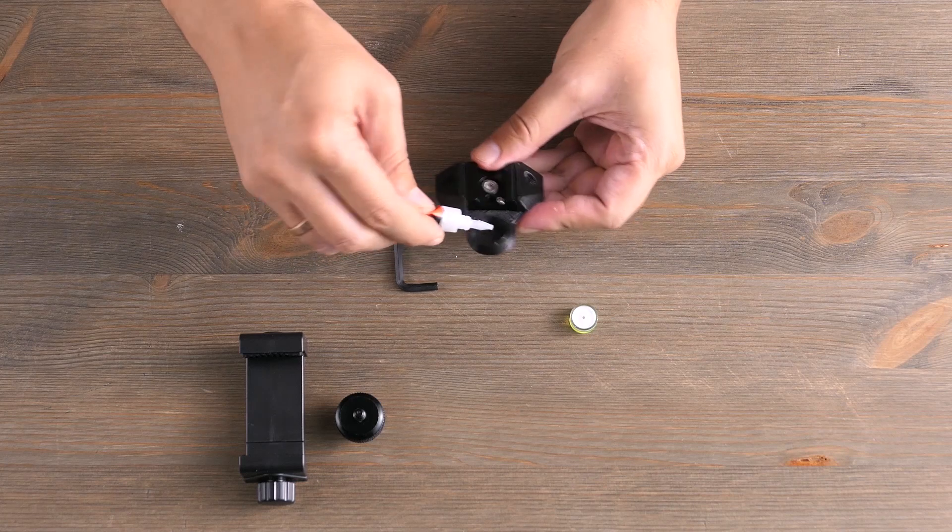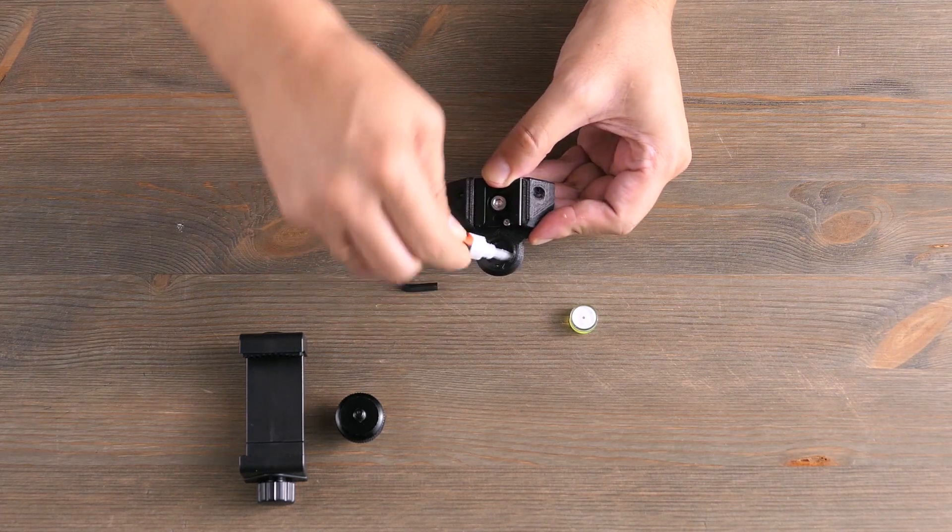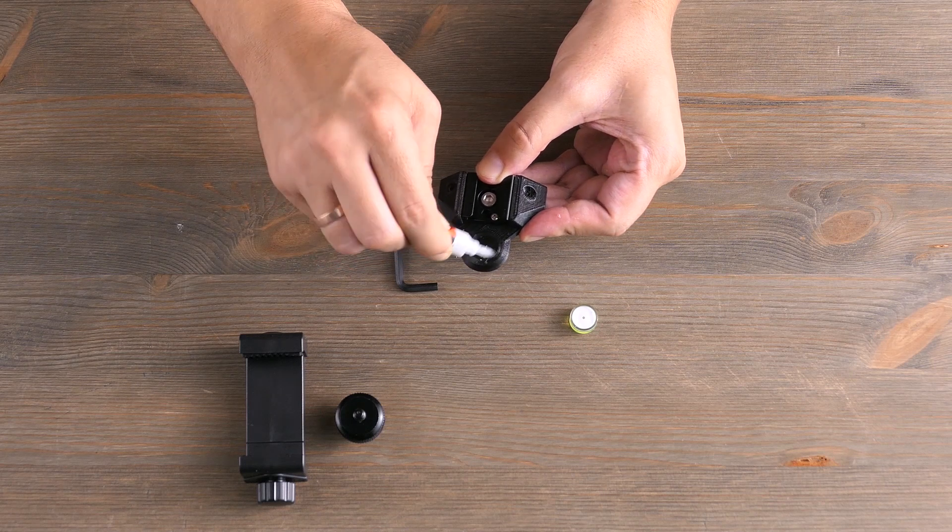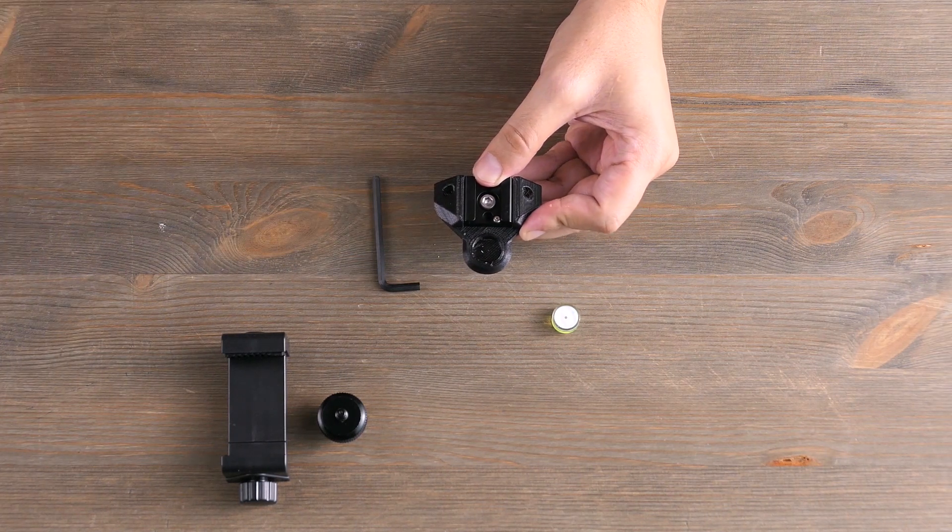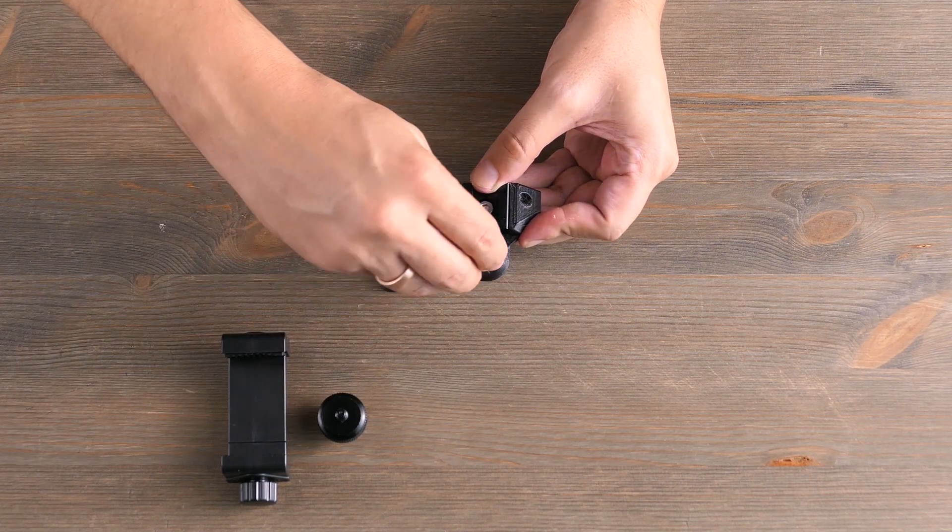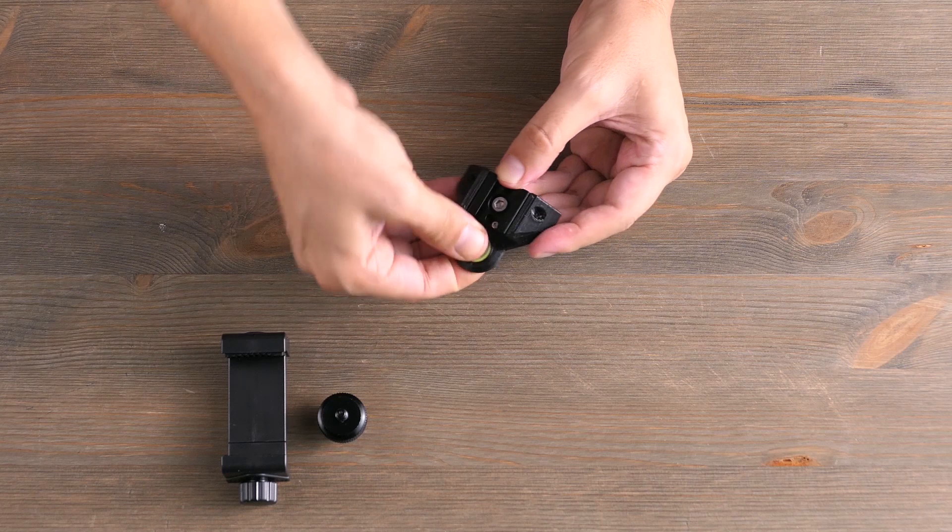To be sure you can put some on the 3D printed piece as well. Just like before, apply it along the sides. Now put the bubble level in place and press the two parts together for a couple of seconds.